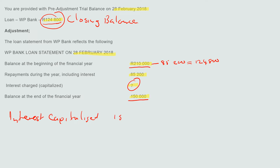So the interest capitalized will be $150,000 minus $124,800. This works — just be careful, this works when there is no additional loan during the year.